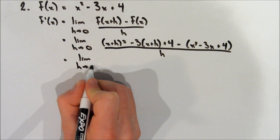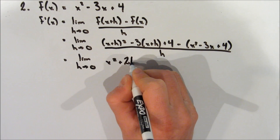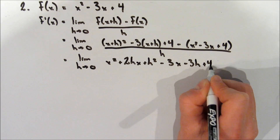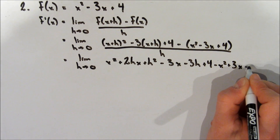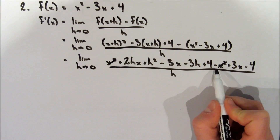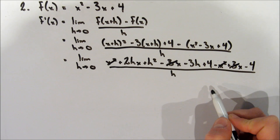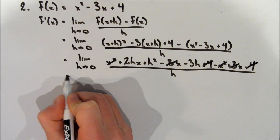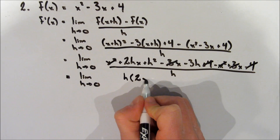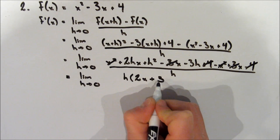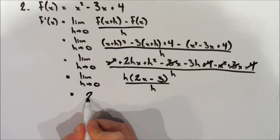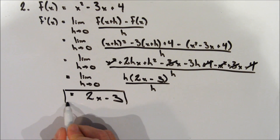Keeping the limit, we expand all the brackets: x squared plus 2hx plus h squared minus 3x minus 3h plus 4, minus x squared plus 3x minus 4, all over h. The x squared terms cancel, the 3x's cancel, and the 4's cancel. Now we need to get the h in the denominator to cancel, so we factor an h from the numerator, giving h times 2x plus h minus 3. Dividing top and bottom by h, we get 2x minus 3 over 1.